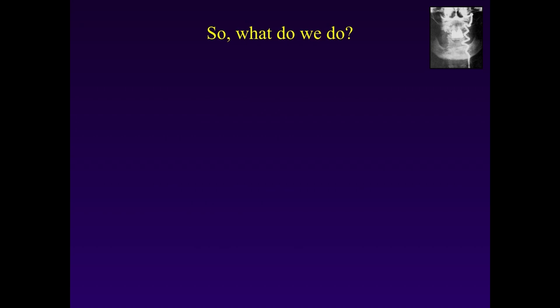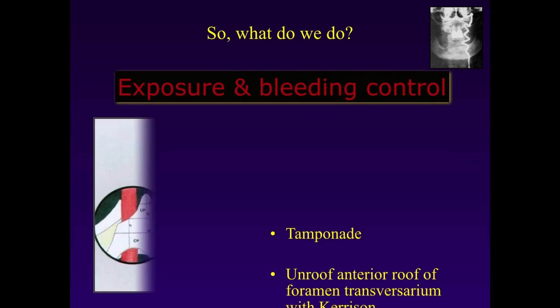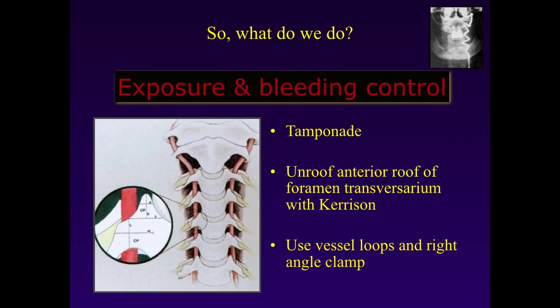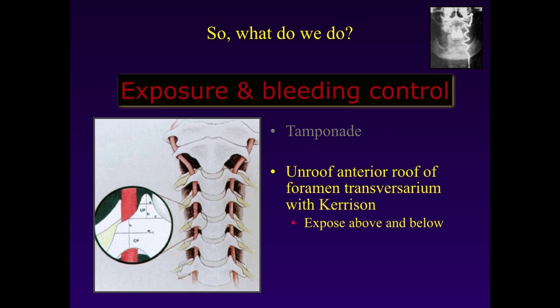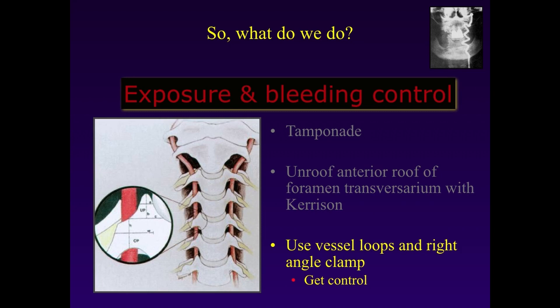If a vertebral artery injury occurs, you need to expose and control the bleeding. First tamponade the vessel. If using an anterior approach, try to unroof the anterior foramen transversarium with a Kerrison. Use vessel loops and a right-angle clamp to control the vessel. Tamponade can be done with pressure, coagulation agents such as Gelfoam sponges, or bone wax. Unroofing the anterior arch and using vessel loops and right-angle clamps will help achieve control.